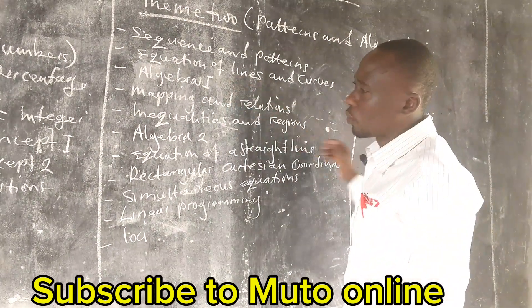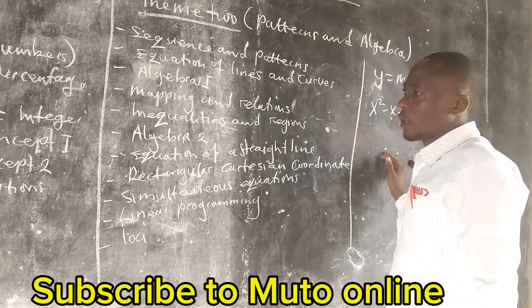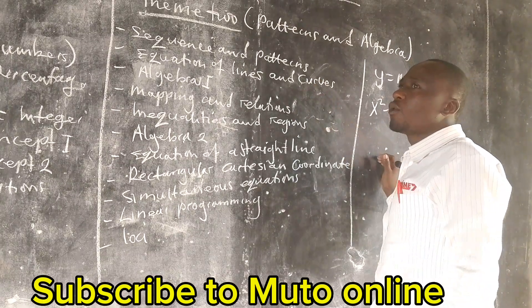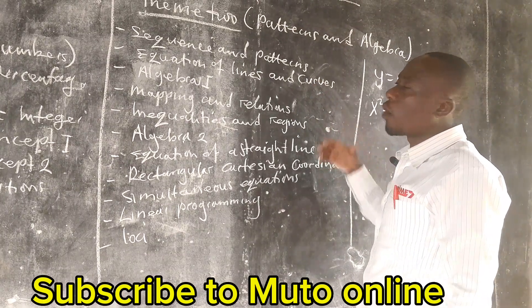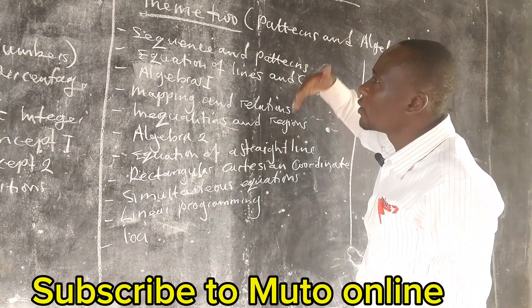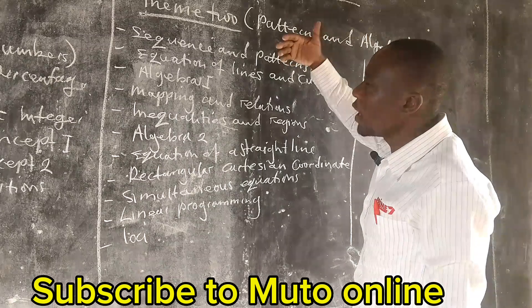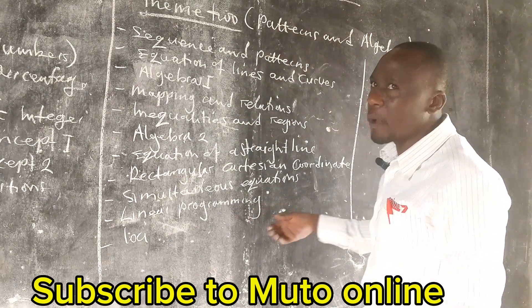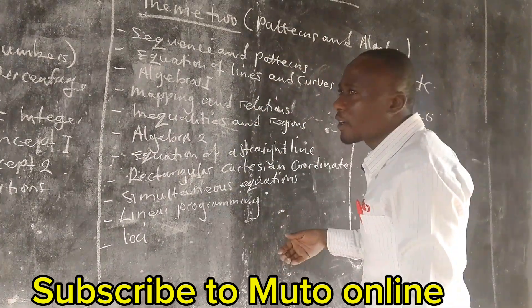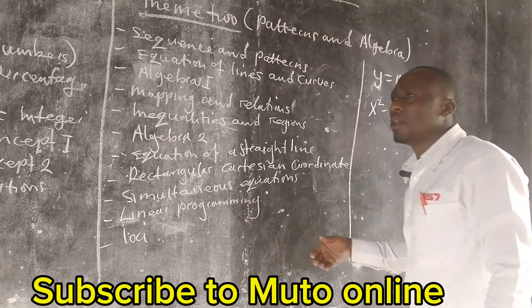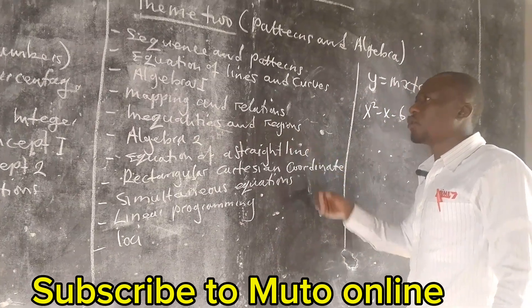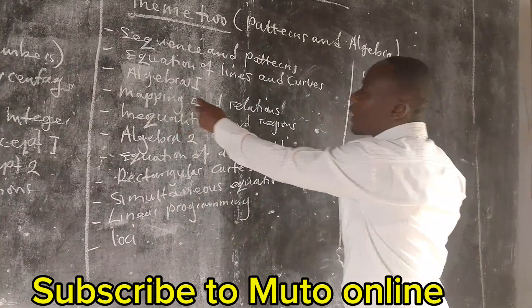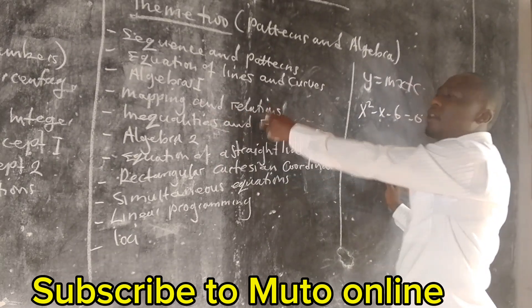Then algebra two. In algebra two, you are going to deal with the difference of two squares, how to expand, and how to get a common factor in such expressions.